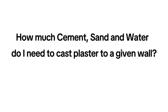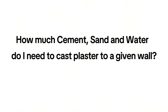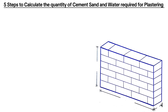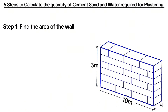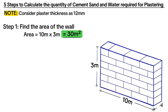This brings us to the question: how much cement, sand and water do I need to cast plaster to a given wall? And you do that in five easy steps. Step 1 is to find the area of the wall. Considering a wall of 10 meters in length and 3 meters in height, the total area is 30 square meters. Consider a plaster thickness of 12 millimeters — thickness usually ranges from 10mm to 15mm — and a mix ratio of 1 to 4, that is 1 part cement and 4 parts sand.